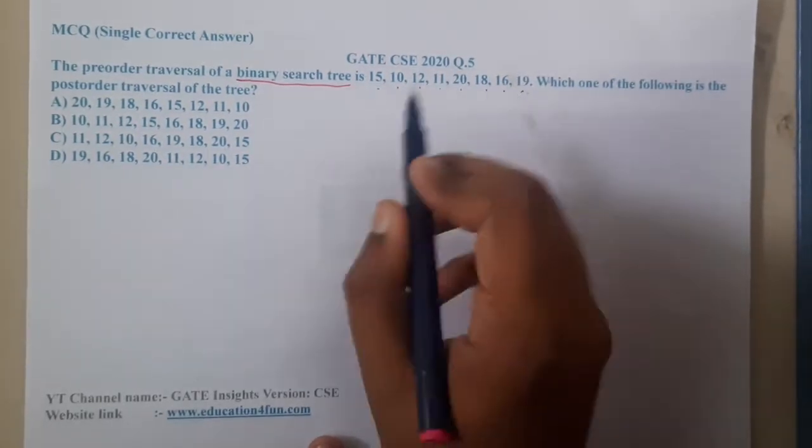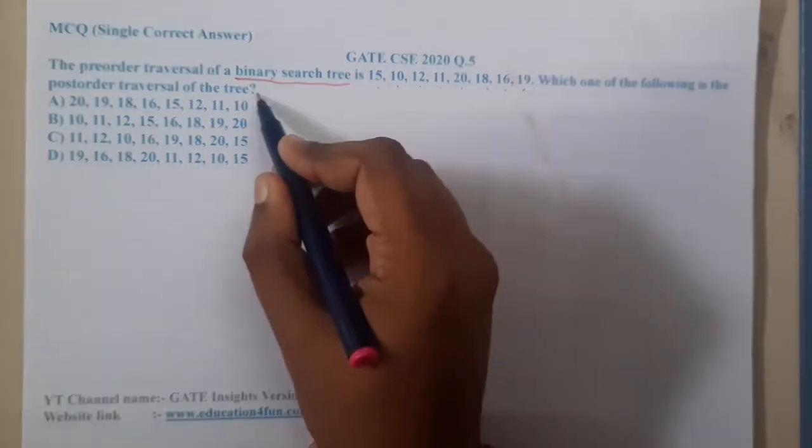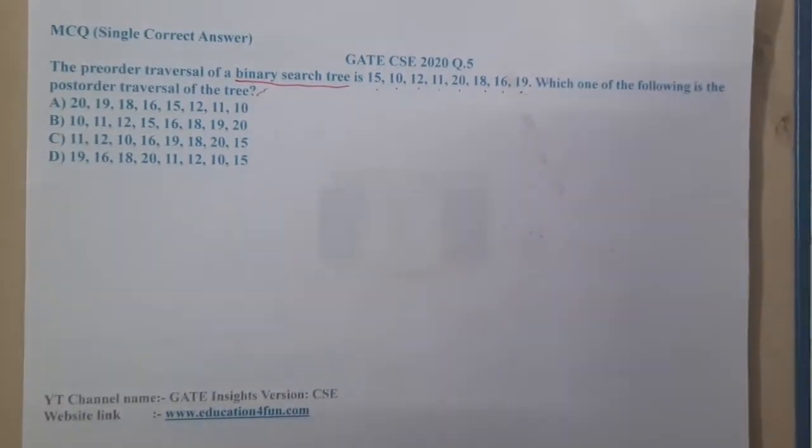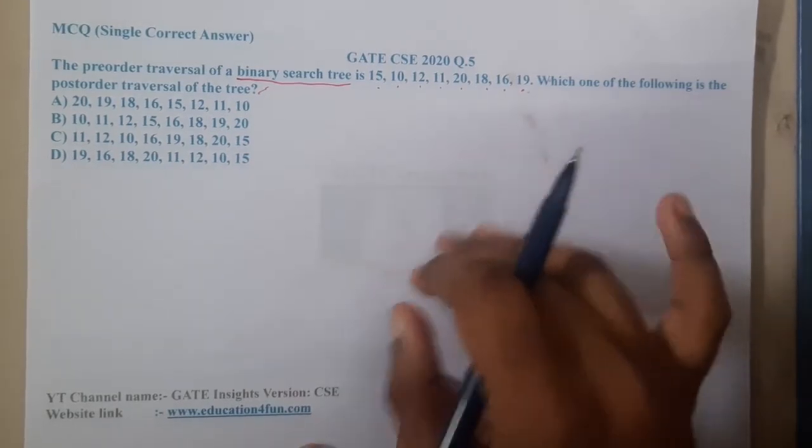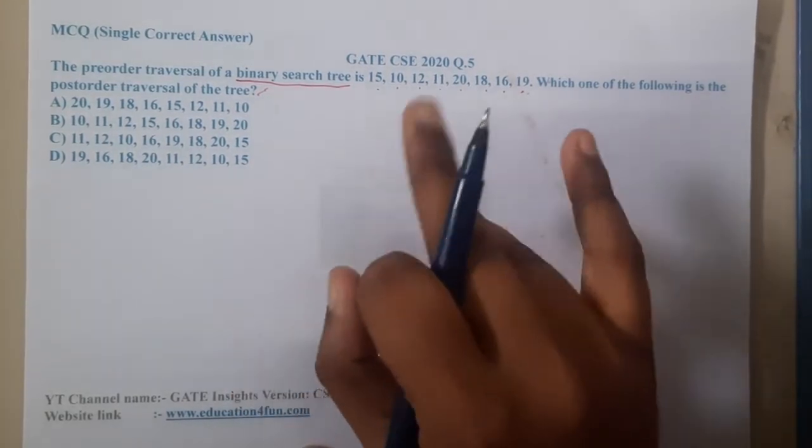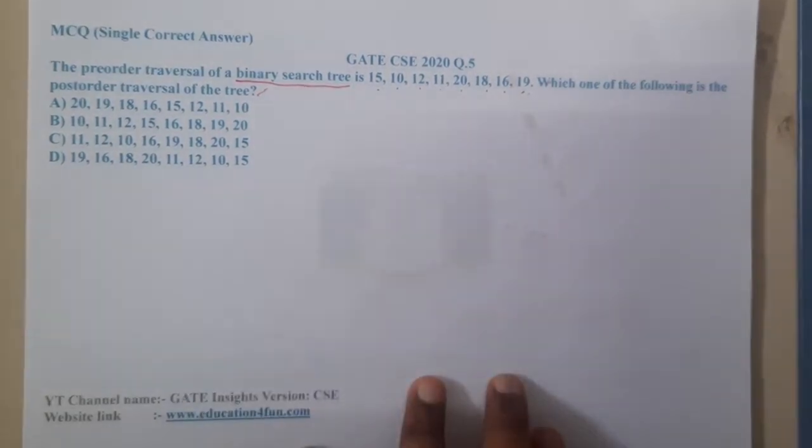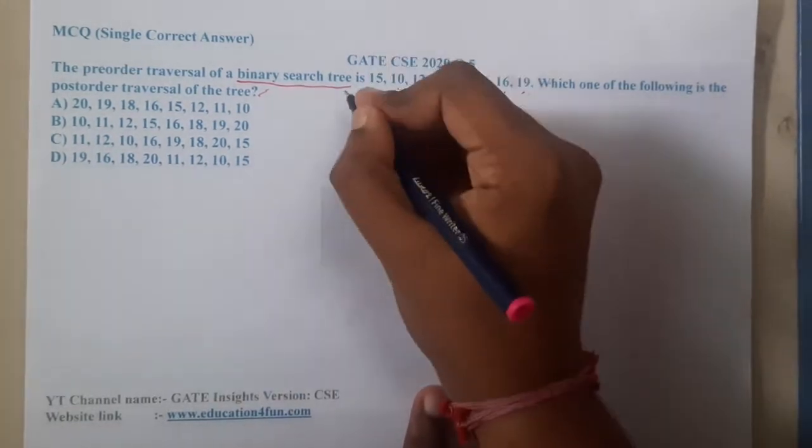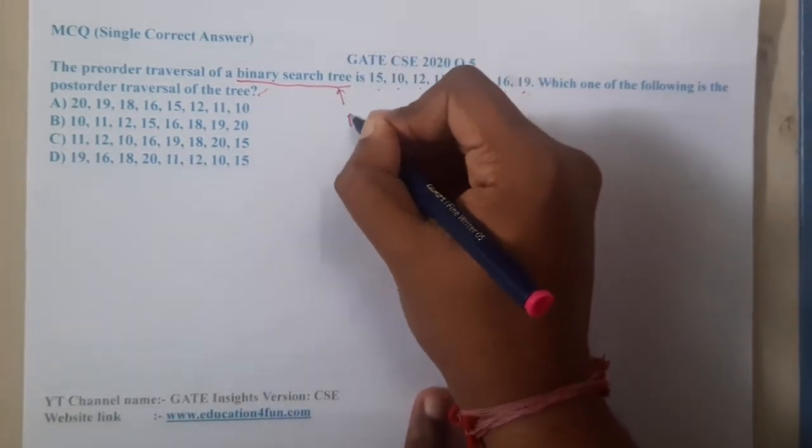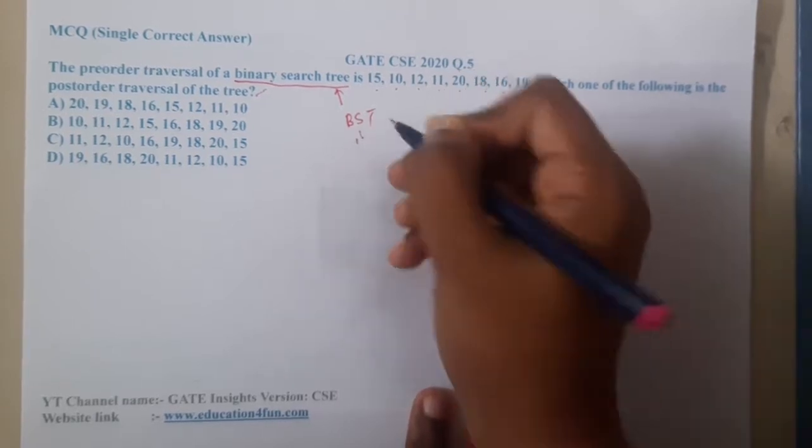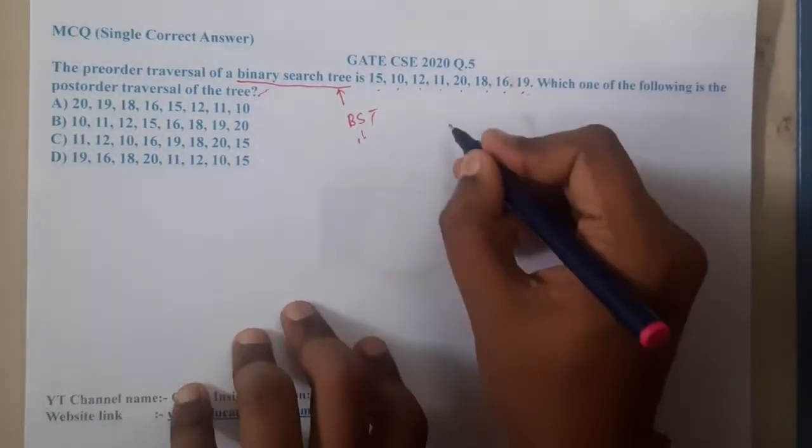If you recall, whenever you are drawing any trees along with preorder or postorder, you need inorder, right? But here they did not give inorder. Why didn't they give it? Because it is a binary search tree. In a binary search tree, what is inorder? It is nothing but ascending order.